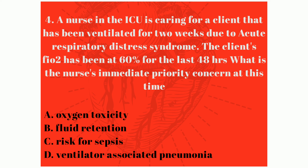Question number four: A nurse in the ICU is caring for a client who has been ventilated for two weeks due to acute respiratory distress syndrome. The client's FiO2 has been at 60% for the last 48 hours. What is the nurse's immediate priority concern? A) Oxygen toxicity, B) fluid retention, C) risk for sepsis, or D) ventilator-associated pneumonia.